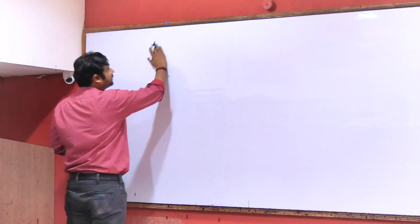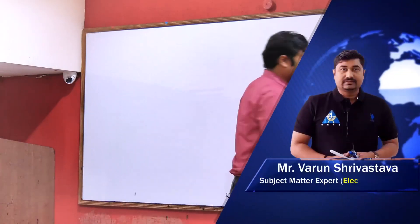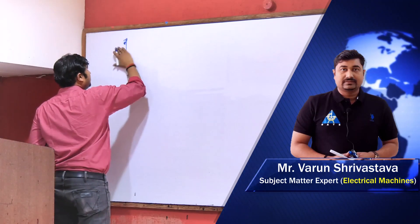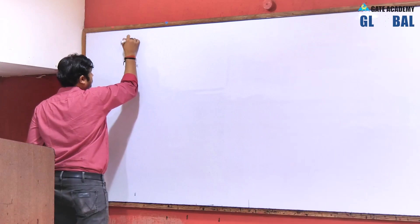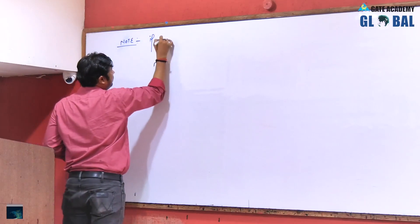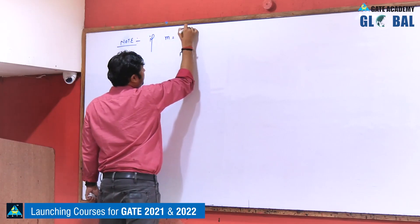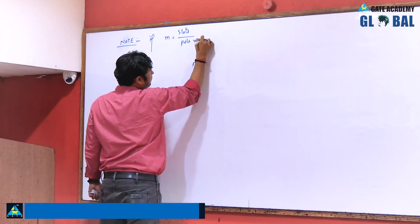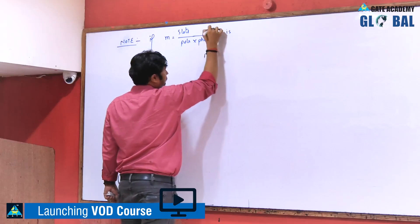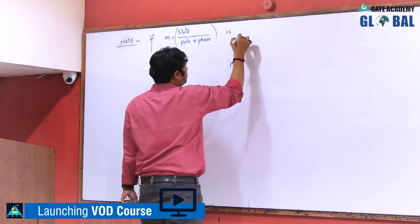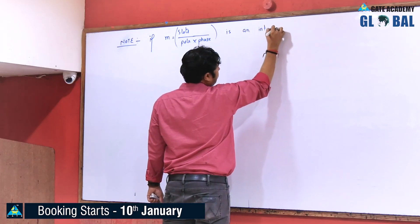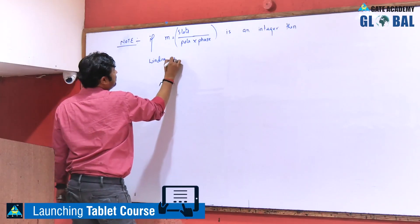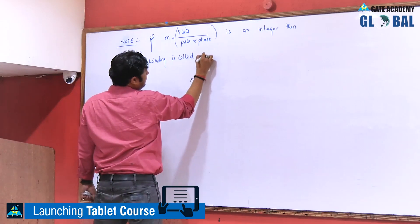If we talk about integral slot winding and fractional slot winding, please make a note: if m, that is number of slots per pole per phase, is an integer, then the winding is called integral slot winding.